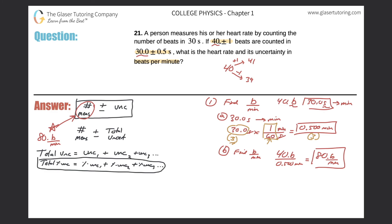Now we have to work on the second part: the uncertainty associated with the measurements. We're going to come back to the total percent uncertainty equation we boxed earlier. Step two is to find the total percent uncertainty. To do that, we need the percent uncertainty of measurement one and the percent uncertainty of measurement two.